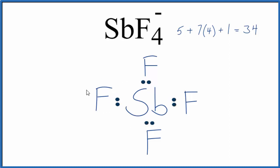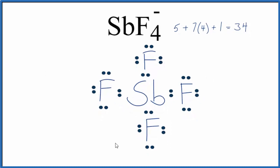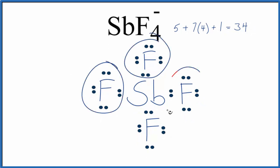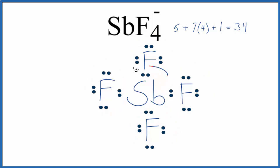Now we'll complete the octets on each fluorine atom. At this point we've used 32 valence electrons, and each of the fluorine atoms has an octet. The central Sb also has an octet, but we still have two valence electrons left and we have to put them somewhere. The answer is that Sb — antimony — can have an expanded octet, since it's below period 3 on the periodic table.